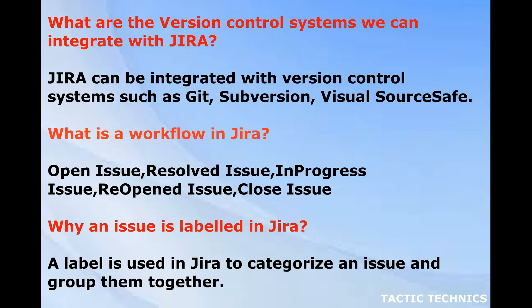What are the version control systems we can integrate with Jira? Jira can be integrated with version control systems such as Git, Subversion, and Visual Source Safe. What is a workflow in Jira? Workflow states include: open issue, resolved issue, in progress issue, reopened issue, and closed issue.